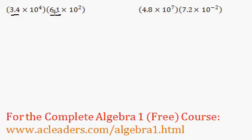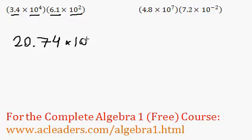So 3.4 times 6.1 is equal to 20.74. Now I need to multiply the tens. 10 to the 4 times 10 to the 2, well we can just add the exponents because the bases are the same and we're multiplying them. So 4 plus 2, 6.